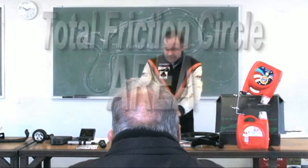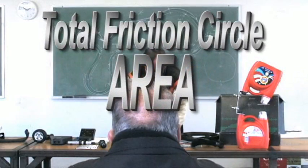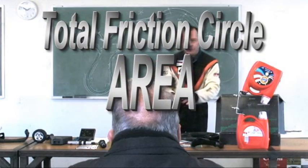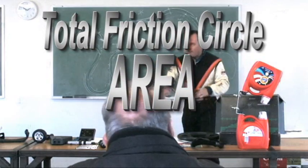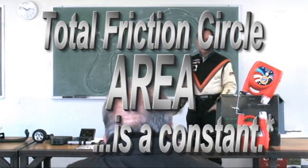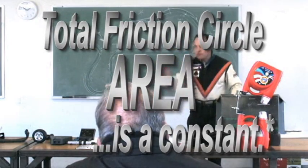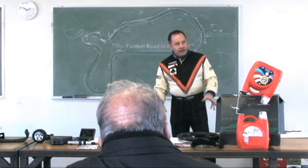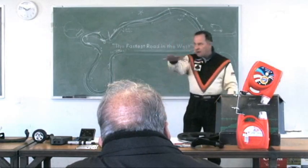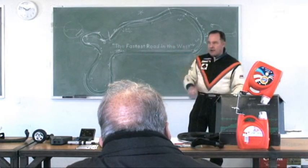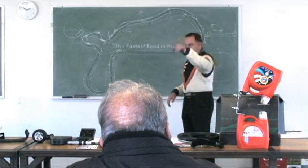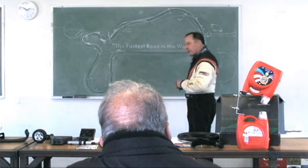It just so happens that the size of those circles, all four of them, is always a constant — as long as there are no vertical curves or loading and everything else. We do actually have vertical curves here on a track like this.